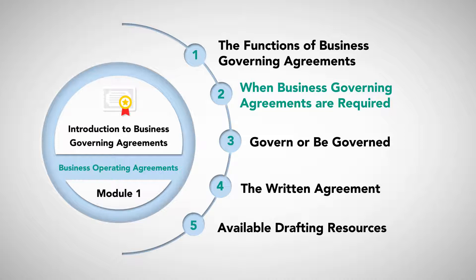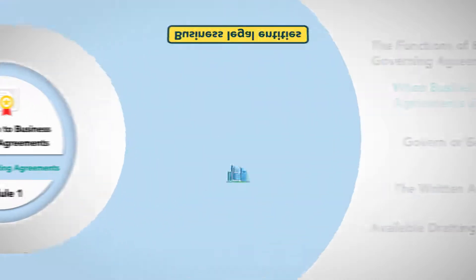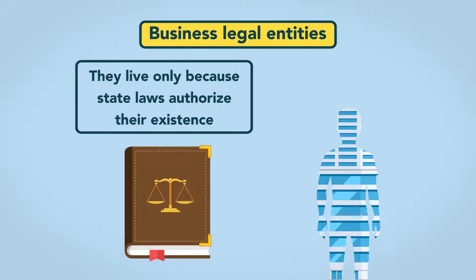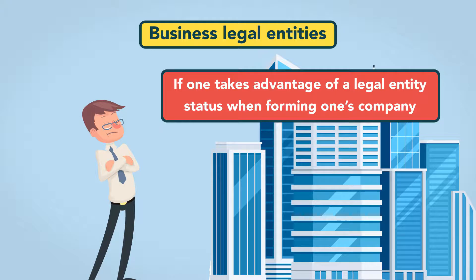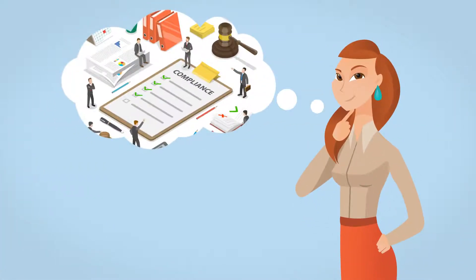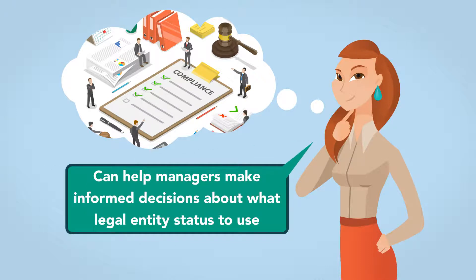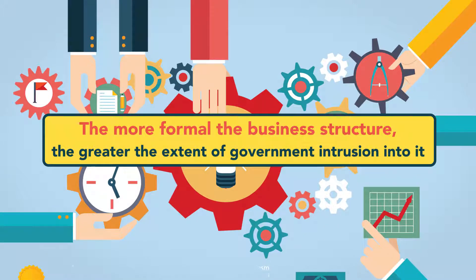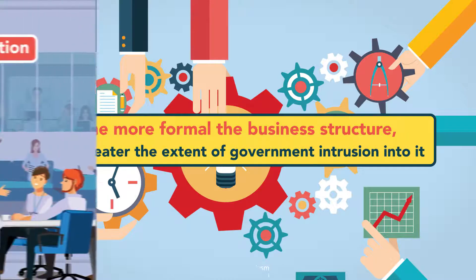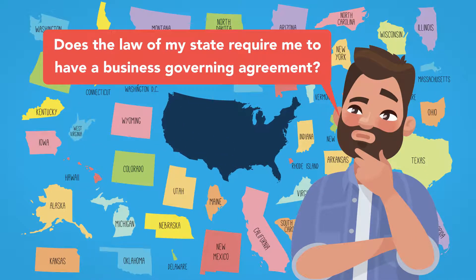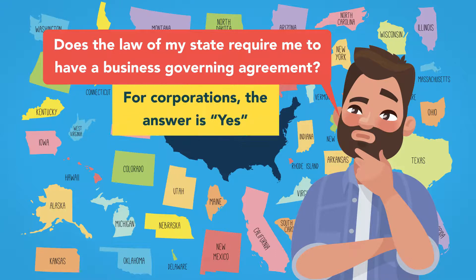When business governing agreements are required. Business legal entities are artificial persons—creatures of the state. They live only because state law authorizes their existence. If one takes advantage of a legal entity's status, this will subject the company to government-imposed requirements in return. As a general rule, the more formal the business structure, the greater the extent of government intrusion into it. For corporations, the answer to whether a governing agreement is required is yes. State corporation laws commonly include directives such as: the incorporators or board of directors of a corporation shall adopt initial bylaws for the corporation.